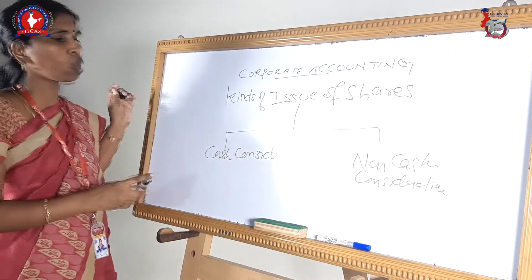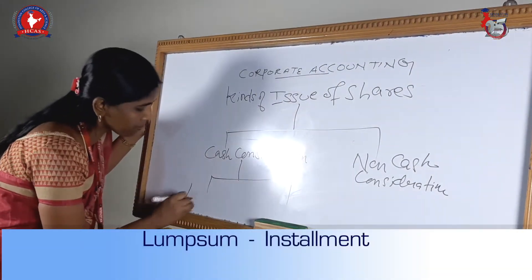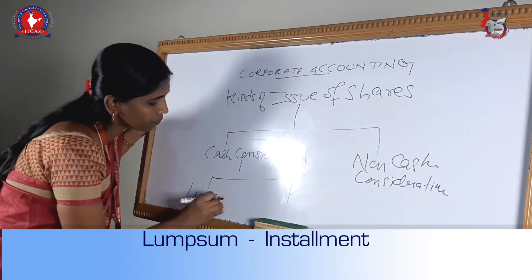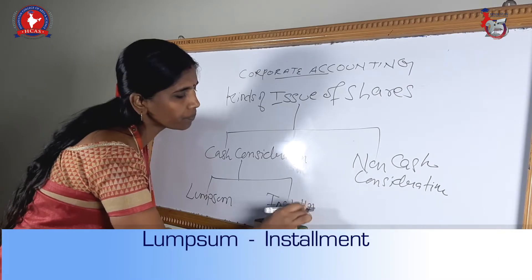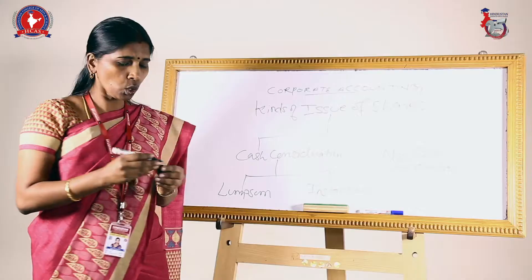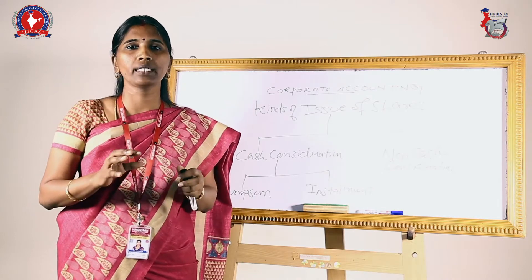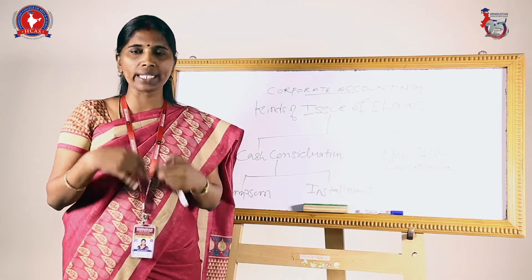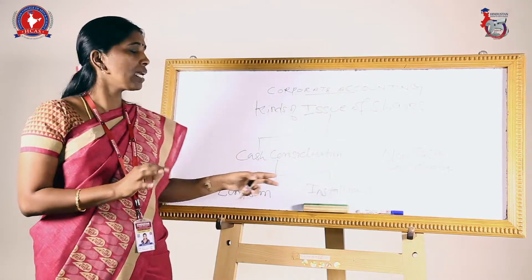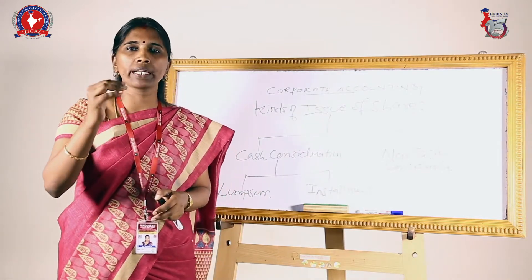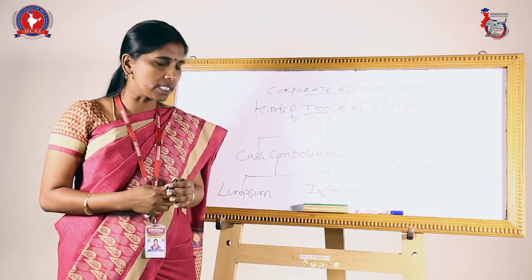In cash consideration there are also two types. One is lump sum and another is installment. Lump sum means the full capital needed is raised in one installment itself — we are going to receive it all at once. Installment means the money is collected in small parts, that is called installment.